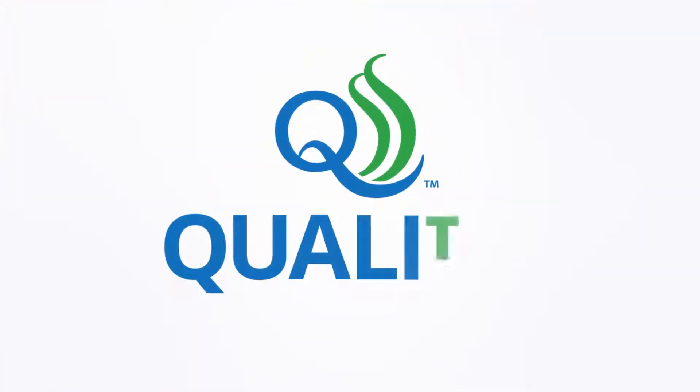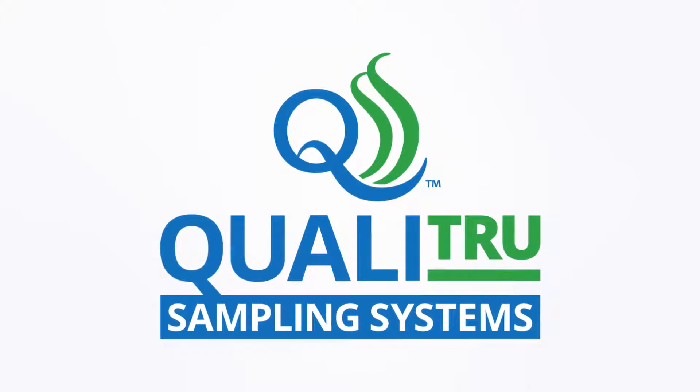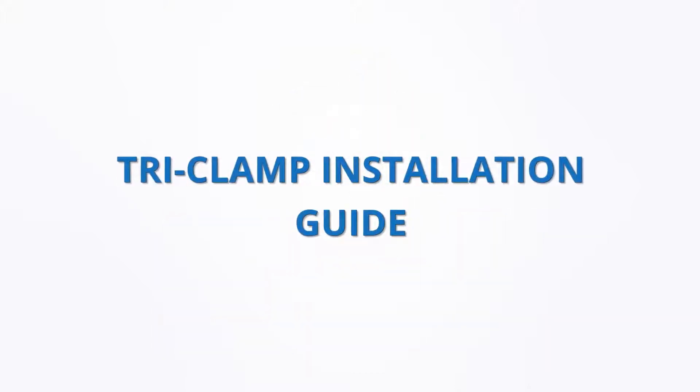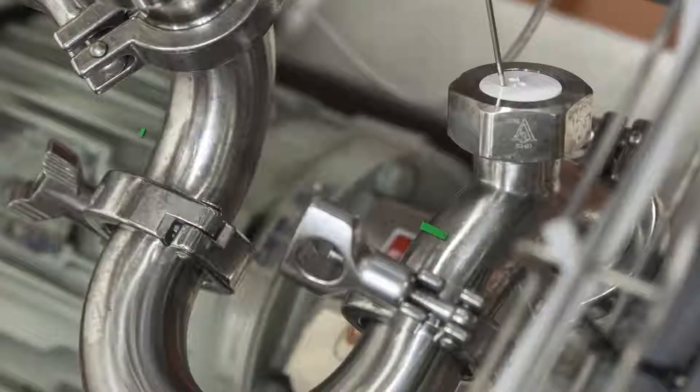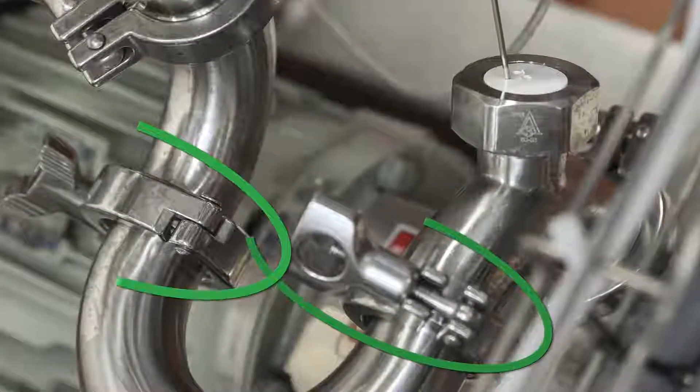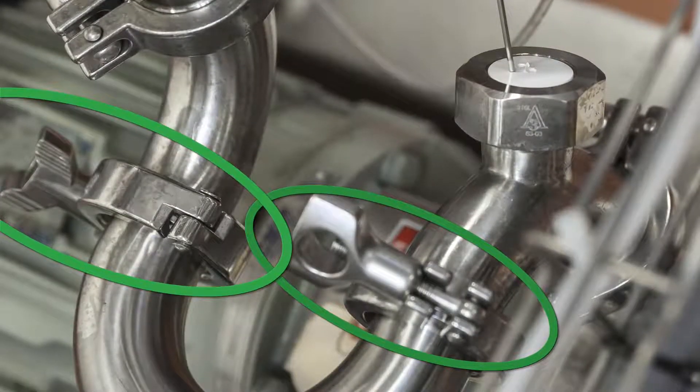Welcome to the QualaTru sampling system's installation instructions for tri-clamping QualaTru sanitary ports. QualaTru sanitary ports can be either welded or tri-clamped in place. The following tutorial demonstrates the proper tri-clamp method for installing QualaTru sanitary ports with beveled ends.